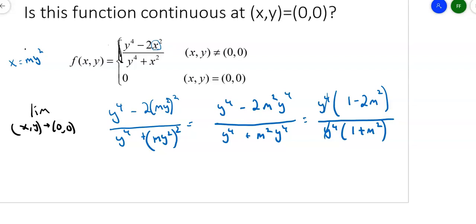If these things really do approach the same limit, then it shouldn't matter what values of m I put in. I should get the same thing every time. What if I put in m equals 1? If I put in m equals 1, I'll get 1 minus 2 on the top, 1 plus 1 on the bottom. That'll give me negative 1/2.